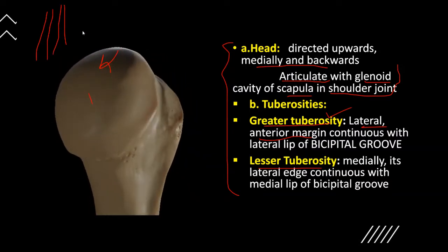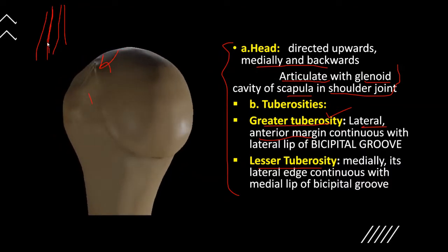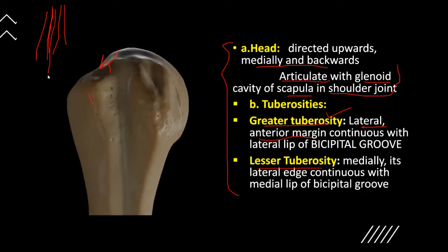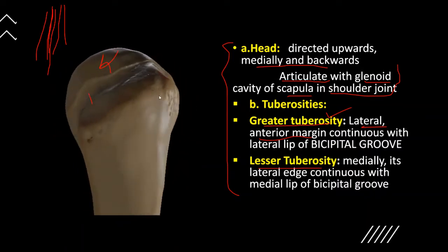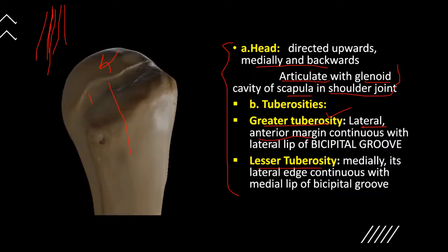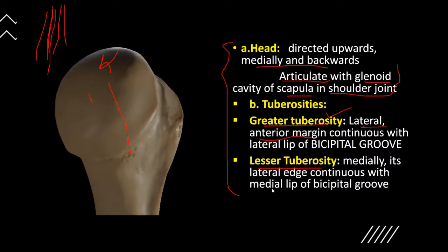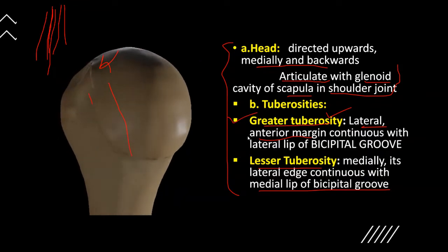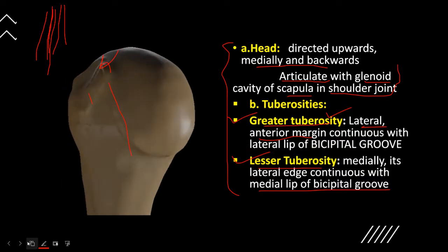The lesser tuberosity is directed medially and is continuous with the medial lip of the bicipital groove. The greater tuberosity is lateral and continuous with the lateral lip of the bicipital groove. So the bicipital groove lies between the greater and lesser tuberosities.